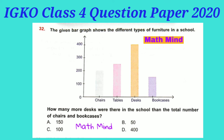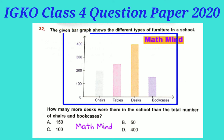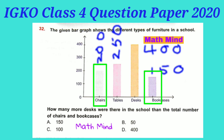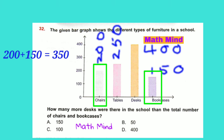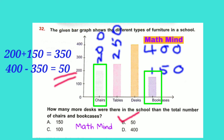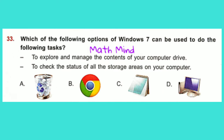Question No. 32: The given bar graph shows different types of furniture in a school. How many more desks were there than the total number of chairs and bookcases? Number of chairs: 200, tables: 250, desks: 400, bookcases: 150. Adding chairs and bookcases: 200 + 150 = 350. Desks = 400. Difference = 400 - 350 = 50. So Option B is correct — the number of desks is 50 more than the total of chairs and bookcases.